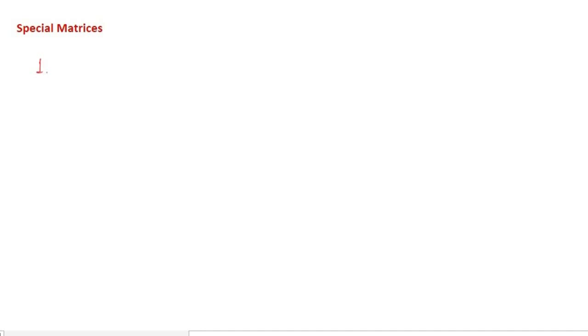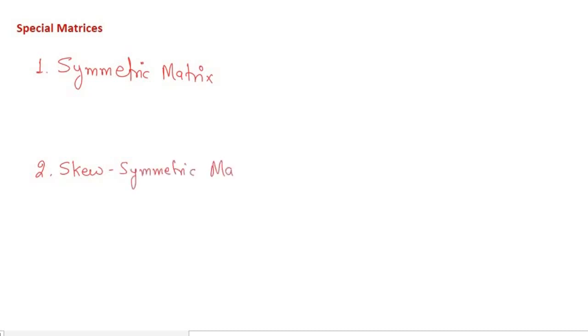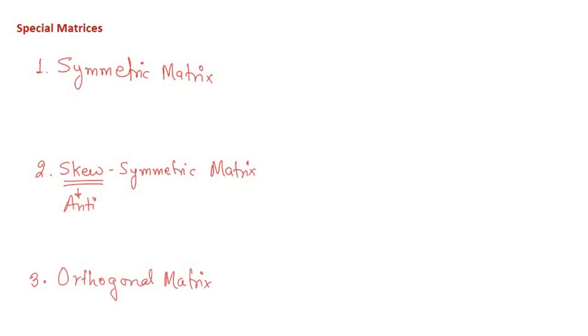Let me write the names of the matrices and define them one by one. First is the symmetric matrix. Second is the skew-symmetric matrix — sometimes the word 'skew' is also replaced by 'anti', so it is also called the anti-symmetric matrix. Third is the orthogonal matrix. I have written these three in a particular manner so that I can define them easily.